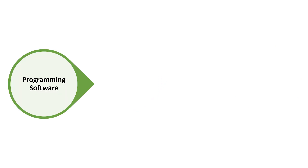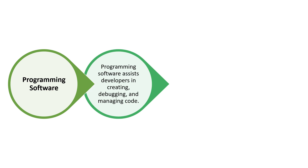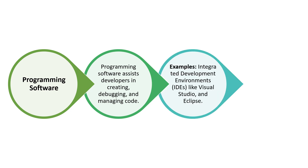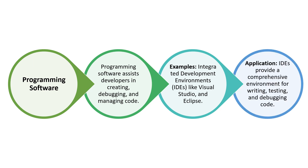Next is programming software. This assists developers in creating, debugging, and managing code — it assists programmers who write programs. Examples are integrated development environments (IDEs) like Visual Studio and Eclipse. These IDEs provide a comprehensive environment for writing, testing, and debugging code. This type of software is meant for programmers.